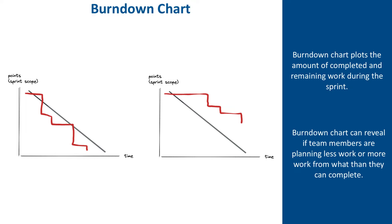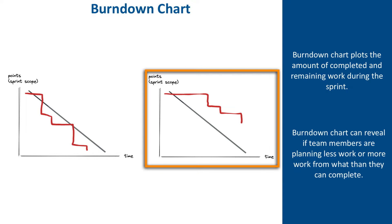There is also a reverse situation. If we notice that the team is often late in completing tasks by not finishing them within the duration of the sprint, that usually means that the team is too aggressive when they plan and they take more work than they can do in one sprint. This is also a warning sign of a problem that can have a significant negative impact on your project.